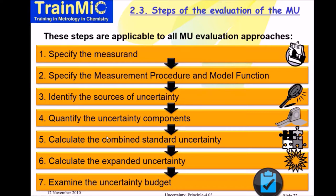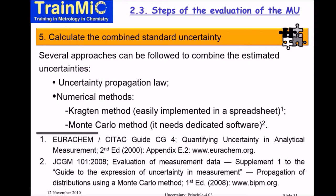We'll start from the combination of the uncertainty components. For the combination of the uncertainty components, there are different approaches. After knowing which components are relevant and after quantifying the uncertainty components, you have to combine them. And you must know how the different variables affect the final result.